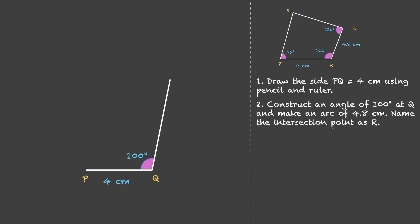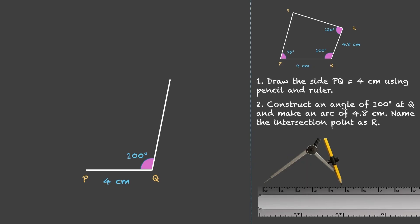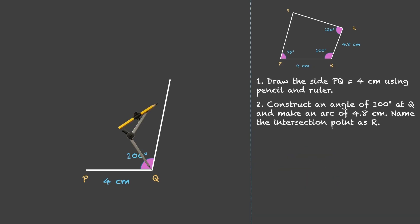Now we need to open our compass to 4.8 centimeters. So let us get this compass, open it to 4.8, keep it at Q and make an arc. This point becomes R. We got QR which is 4.8 centimeters.